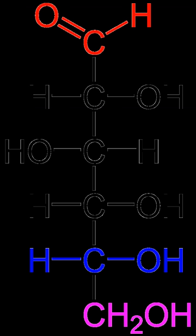Monosaccharides can be linked together into what are called polysaccharides or oligosaccharides in a large variety of ways. Many carbohydrates contain one or more modified monosaccharide units that have had one or more groups replaced or removed. For example, deoxyribose, a component of DNA, is a modified version of ribose. Chitin is composed of repeating units of N-acetyl glucosamine, a nitrogen-containing form of glucose.